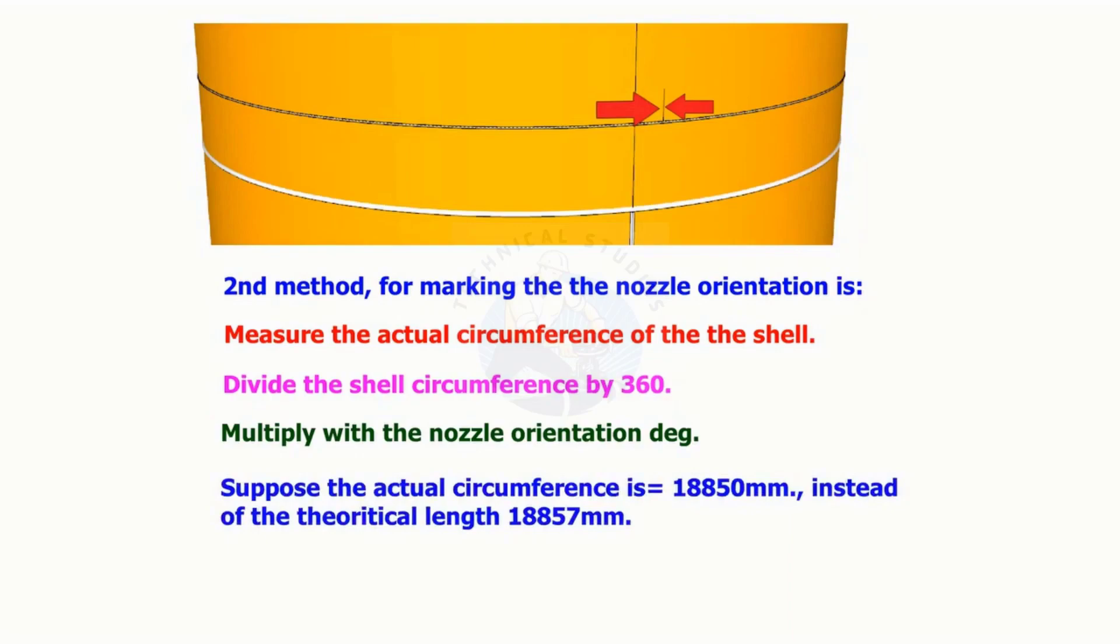1 degree length will be 18,850 divided by 360 equals 52.361 millimeters, instead of 52.38 millimeters.